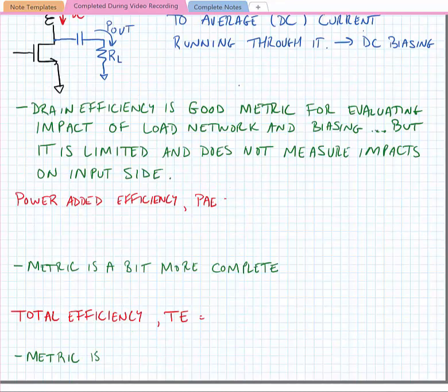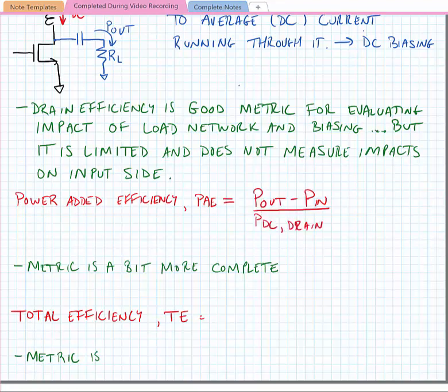In order to try and improve this metric, we have something called power added efficiency or PAE. PAE is equal to P out minus P in divided by the DC power consumed in the drain.